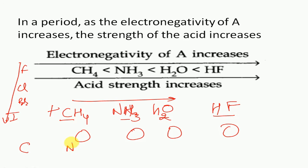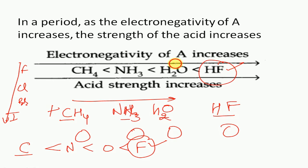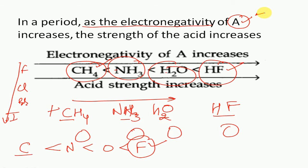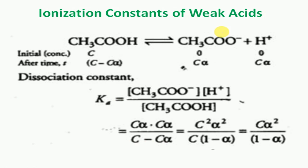Fluorine is the most electronegative element of the periodic table, more than oxygen, then nitrogen, and lastly carbon. The more electronegative the element, the more acidic the character. That is why HF is more acidic than H2O, H2O is more acidic than NH3, and NH3 is more acidic than CH4. In a period, as the electronegativity of A (the species attached to H) increases, the acidic strength increases.